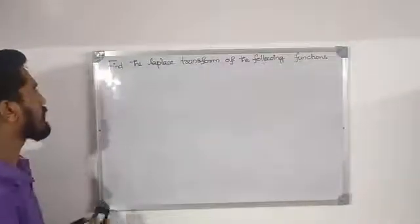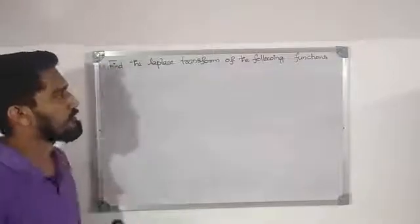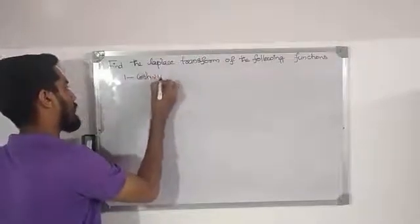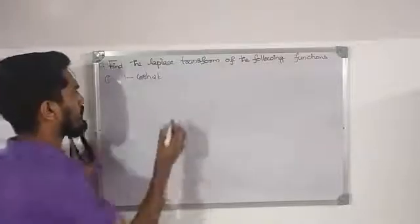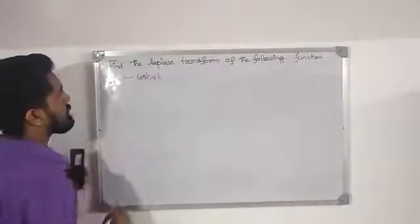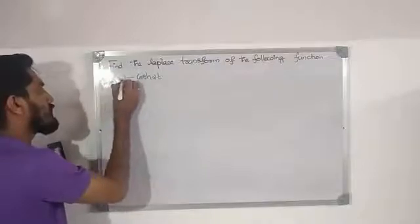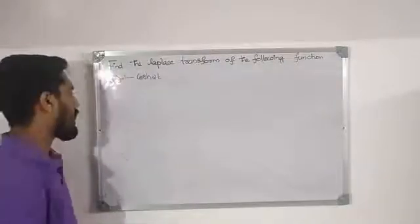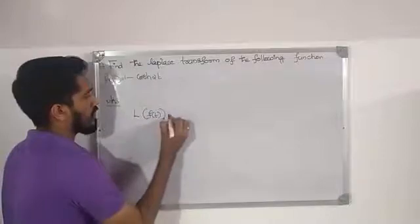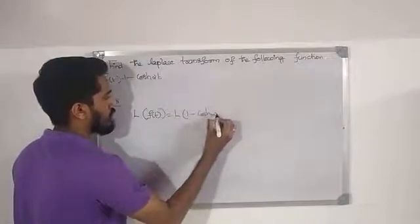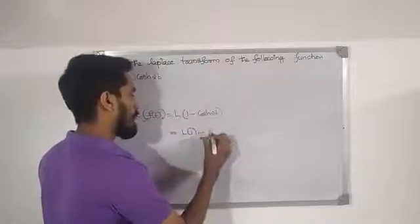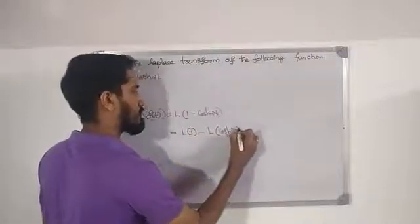Next question: find the Laplace transform of the following functions. First one is 1 minus cosh(2t). We want to find L{f(t)} = L{1 - cosh(2t)}, which equals L{1} minus L{cosh(2t)}.